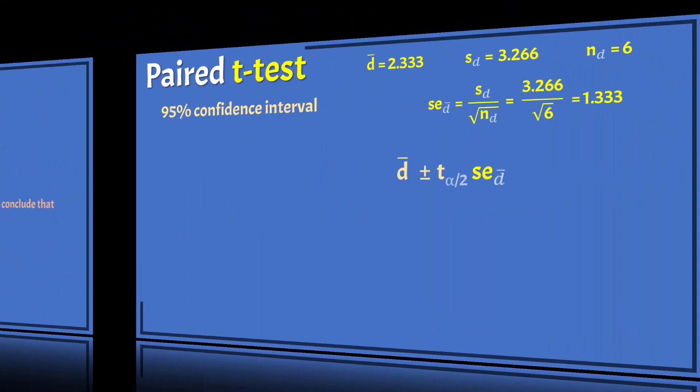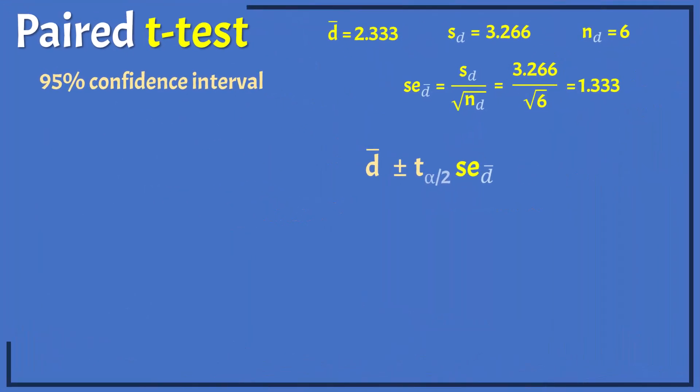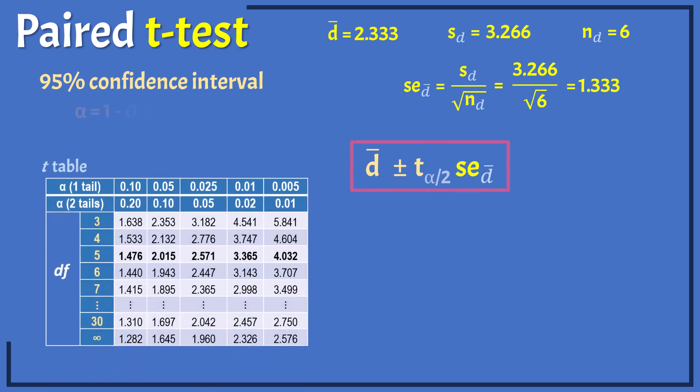To construct a 95% confidence interval for the mean difference, we use this formula. For 95% confidence, alpha is 0.05. And at df equals 6 minus 1 equals 5, the critical value is 2.571, as we saw earlier.